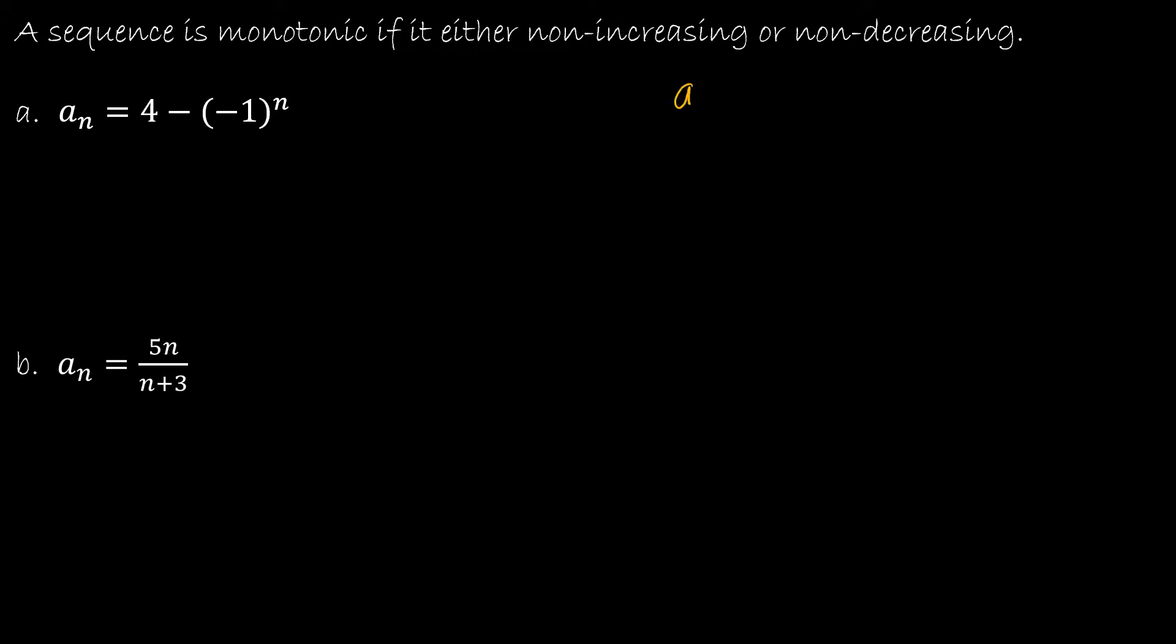A sequence is monotonic if it's either non-increasing or non-decreasing. So essentially what we're saying is a₁ has to be less than or equal to a₂, and less than or equal to a₃, etc., all the way through the last term of the sequence. The fact that it's or equal to is why it's monotonic. You might have also heard the term strictly monotonic, which is where it cannot be equal to.